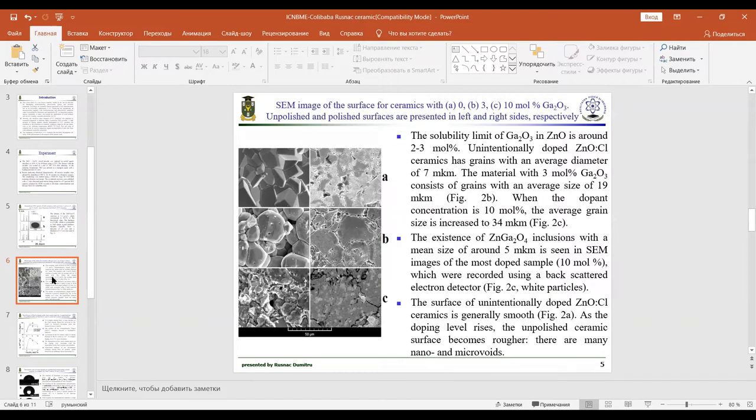The surface of unintentionally doped zinc oxide chloride ceramics is generally smooth. As the doping level raises, the unpolished ceramic surface becomes rougher. There are many nano and micro voids.